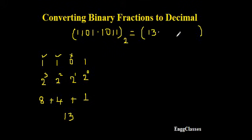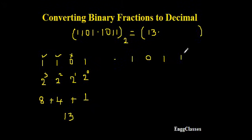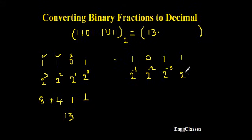Now I'll consider the fractional part: 1011. Just as the integer digits were assigned positions 2⁰, 2¹, 2², 2³, the fractional digits are assigned negative powers: 2⁻¹, 2⁻², 2⁻³, and 2⁻⁴. I need to multiply each fractional digit by its corresponding negative power of two.